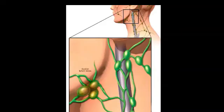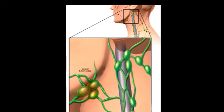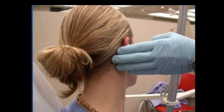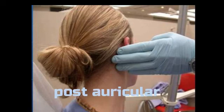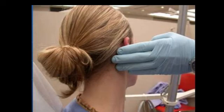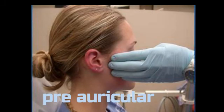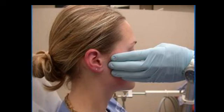Lymph nodes are oval structures draining different body parts. Normally they are non-tender, soft, and cannot be felt on palpation. When examining lymph nodes, tenderness and mobility should be assessed. From a dental point of view, we check post-auricular, pre-auricular, submental, submandibular, and cervical lymph nodes. Post-auricular lymph nodes are present behind the ear near the insertion of the sternocleidomastoid; enlarged nodes here indicate infection of the scalp, temporal and frontal regions, and ear. Pre-auricular lymph nodes are palpated in front of the ear; enlargement indicates ear infection.